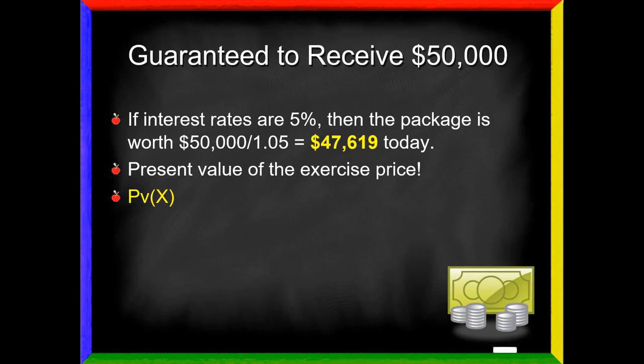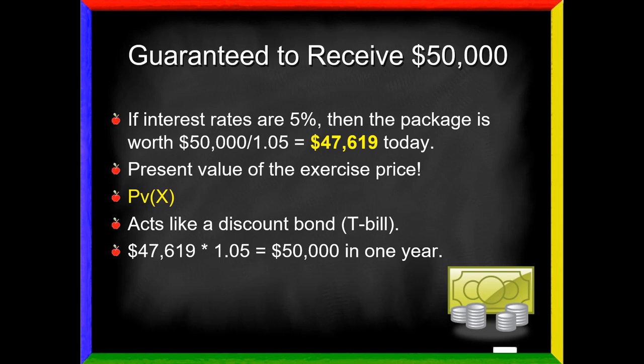He spent $52,000 so far. But we know that the package guarantees he will receive $50,000 in one year. If interest rates are 5%, doesn't matter what the interest rate is but just pick something, then the package today has to be worth $47,619. That's the present value of the exercise price. What it means is that if you're going to receive $50,000 a year from now, it's not worth $50,000 today. It's got to be worth less. Because you could take that cash and invest it and end up with more in the future. If I have $47,619 and invest it at 5%, I will end up with $50,000 in one year.